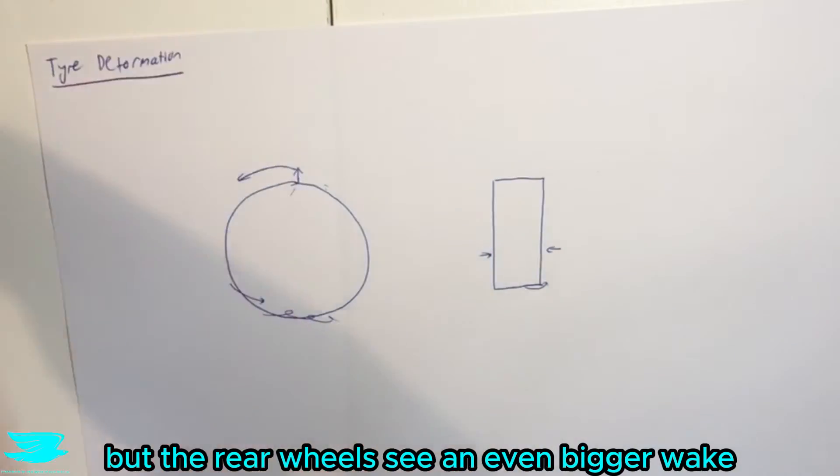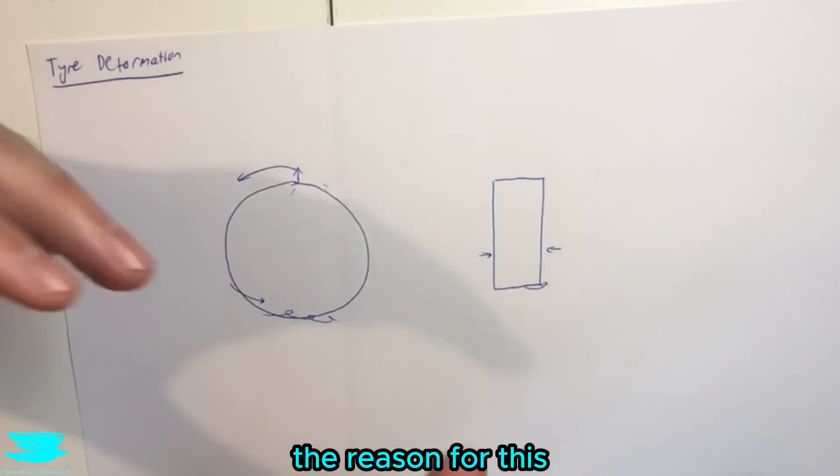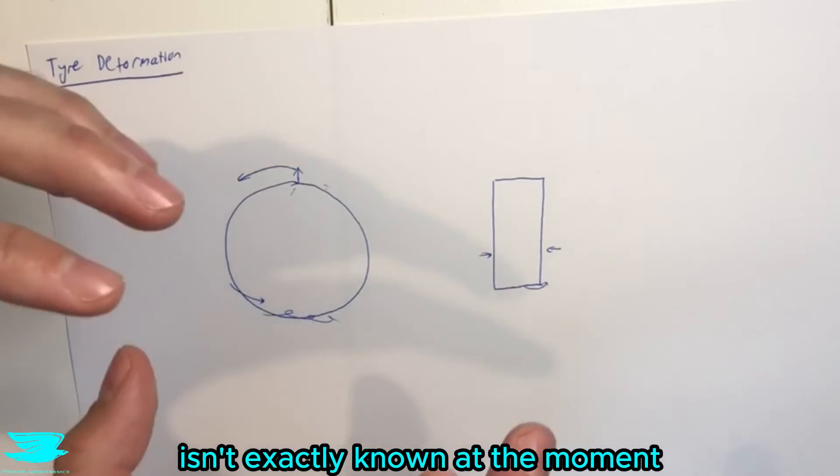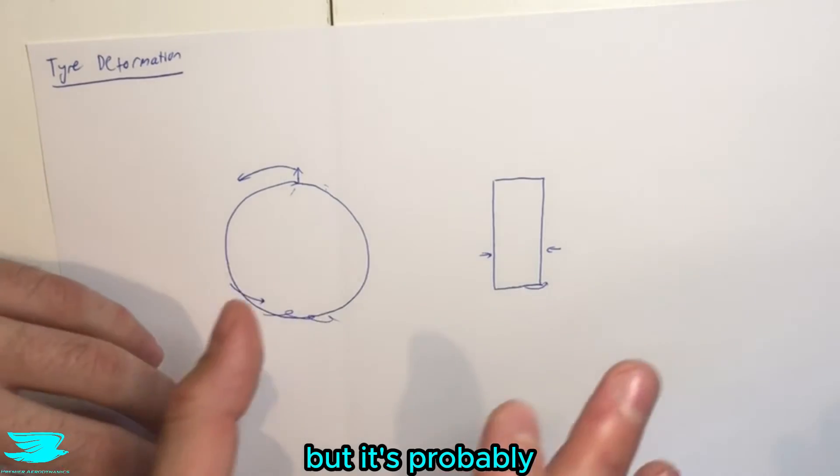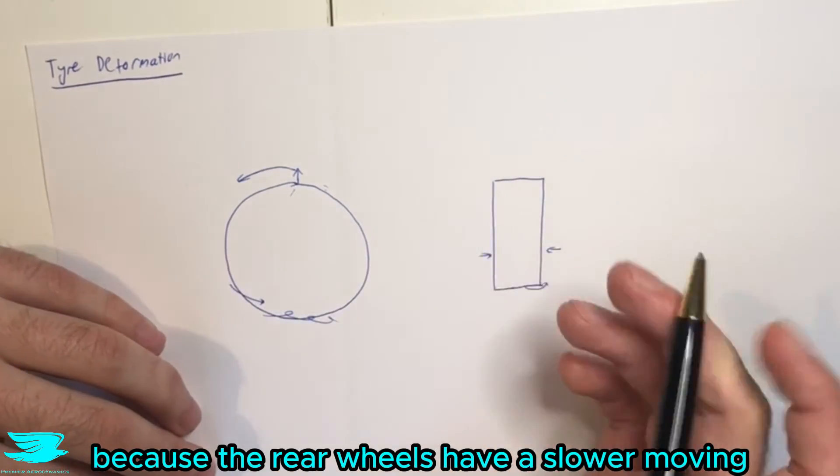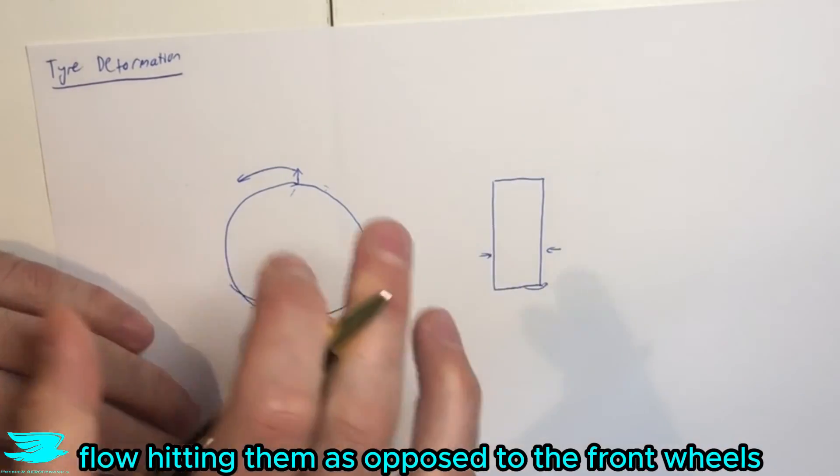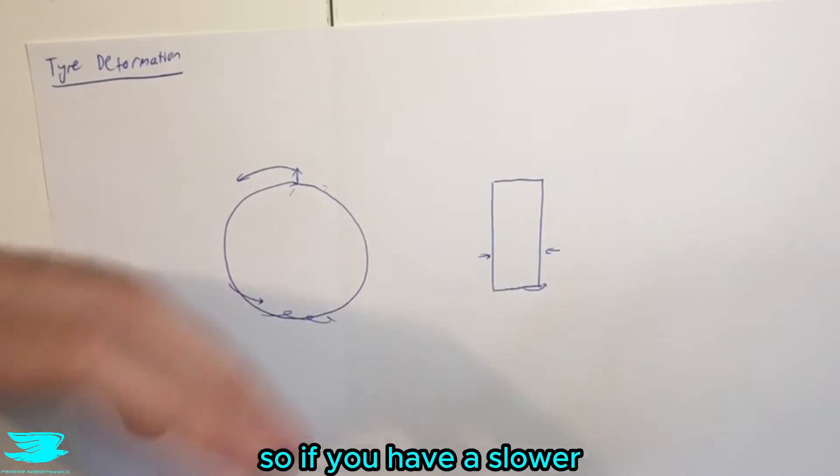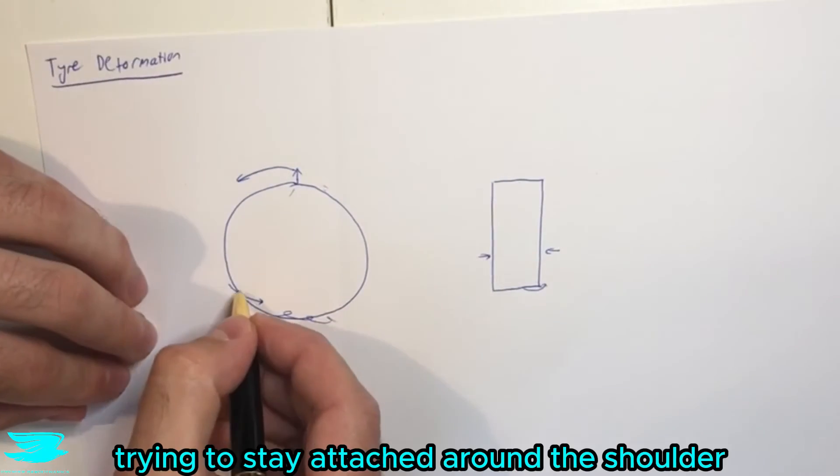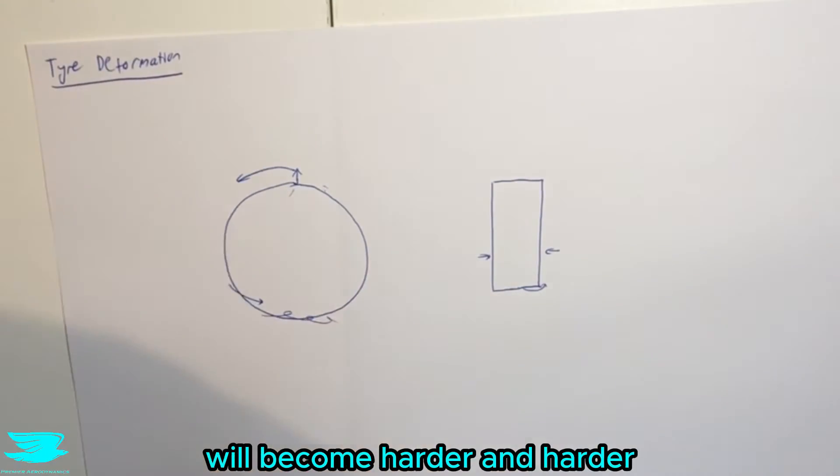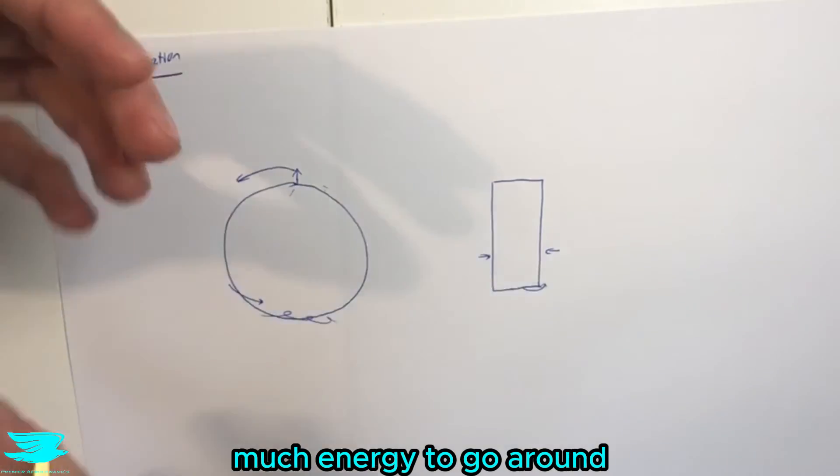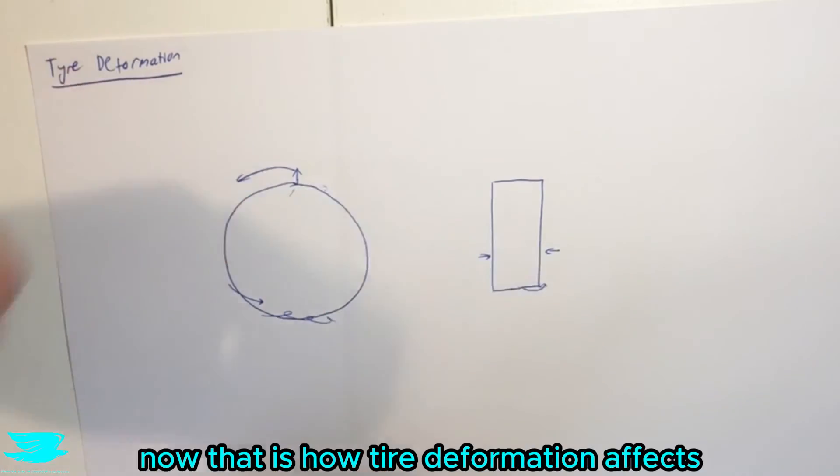but the rear wheels see an even bigger wake because the reason for this isn't exactly that known at the moment, but it's probably because the rear wheels have a slow moving flow hitting them as opposed to the front wheels. So if you have a slow moving flow hitting a wheel, trying to stay attached around the shoulder will become harder and harder because you don't have as much energy to go around this smaller radius of curvature now.